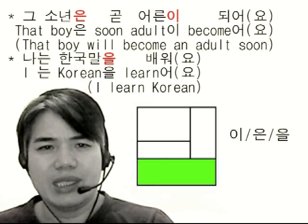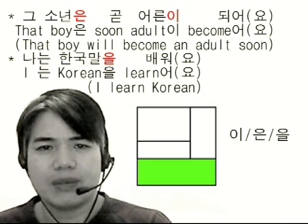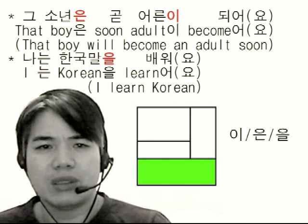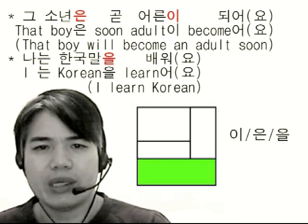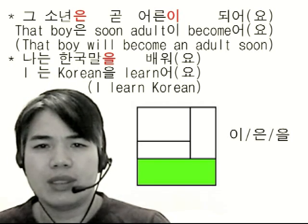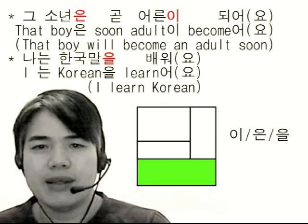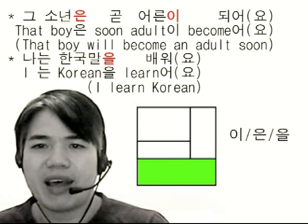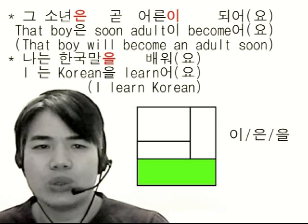We use 이, 은, 을 when the previous syllable has a bottom consonant. Example: 그 소년은 곧 어른이 되어요. That boy 은, adult 이, become 어요 — that boy will become an adult soon.